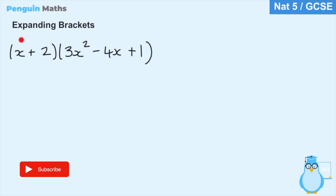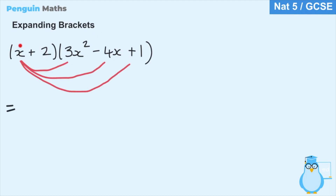In all previous examples we've only had two terms maximum within each set of brackets. But this time we have one bracket with two terms — x and 2 — and another bracket with three terms: 3x squared, minus 4x, and 1. This means we cannot use FOIL, since FOIL only works with two terms in each bracket. However the principles remain the same — we multiply everything in one bracket by everything in the other. So we'll multiply everything in the second bracket by x, then do the same with 2. Multiplying by x: 3x squared times x is 3x cubed, minus 4x times x is minus 4x squared, and 1 times x is just x.